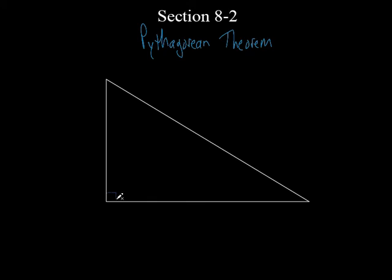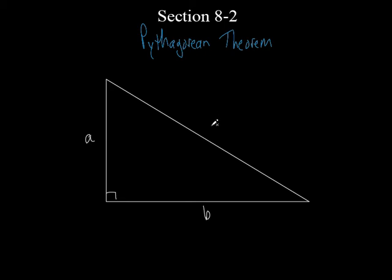Only if you have a right triangle. When we talk about the Pythagorean theorem, we use certain letters that stand for certain sides of a right triangle. A right triangle has two legs and a hypotenuse. One of the legs is A, the other leg is B. The hypotenuse is always written as C.